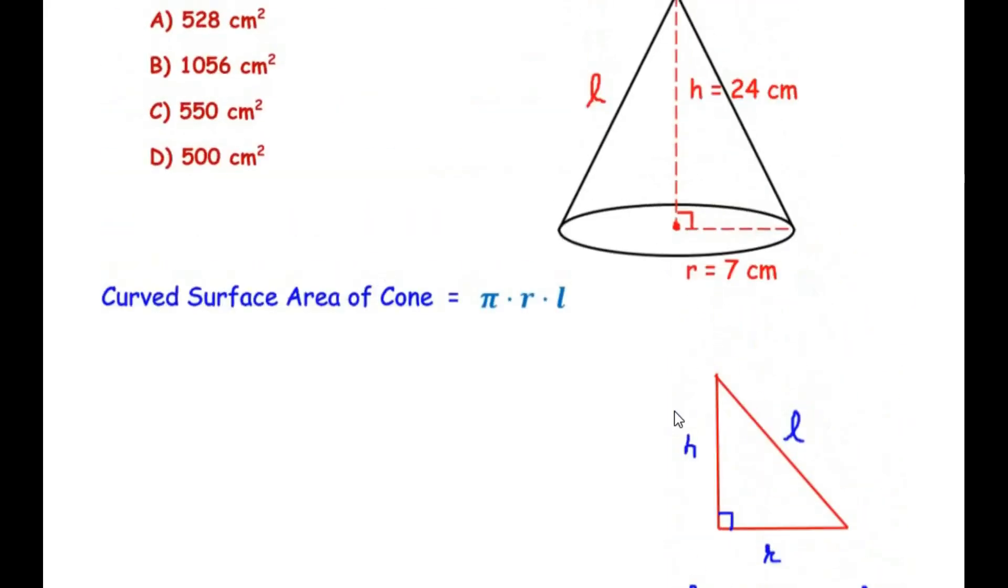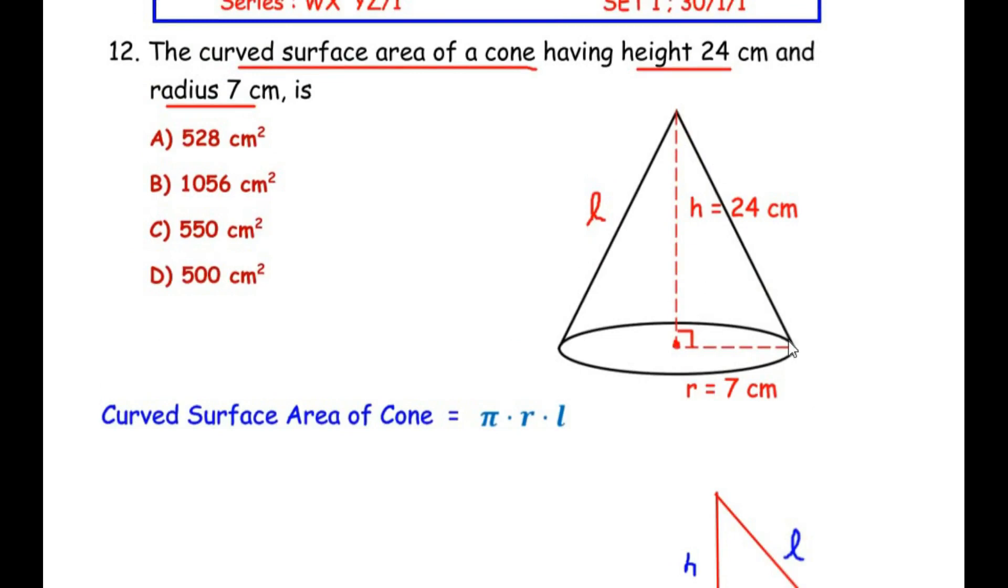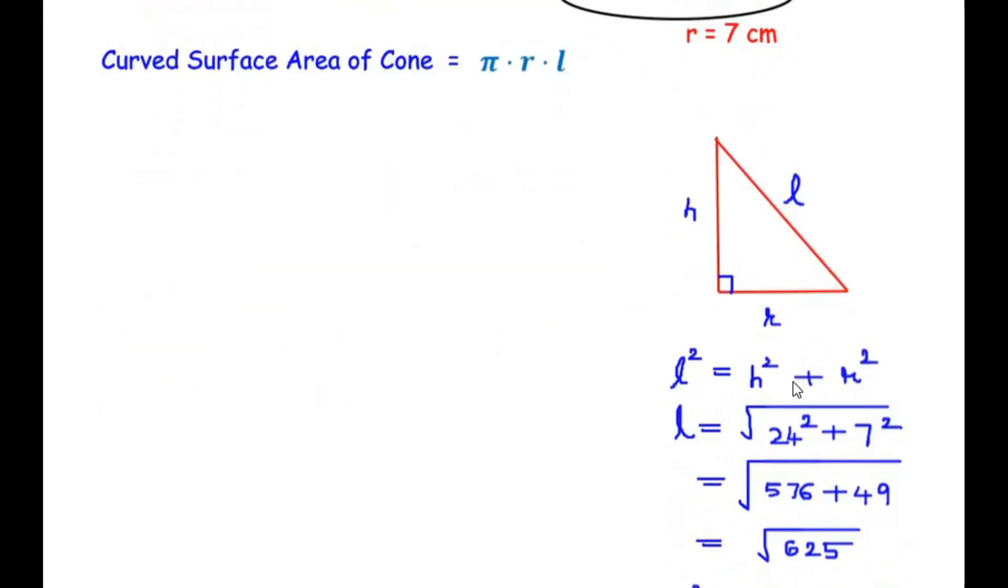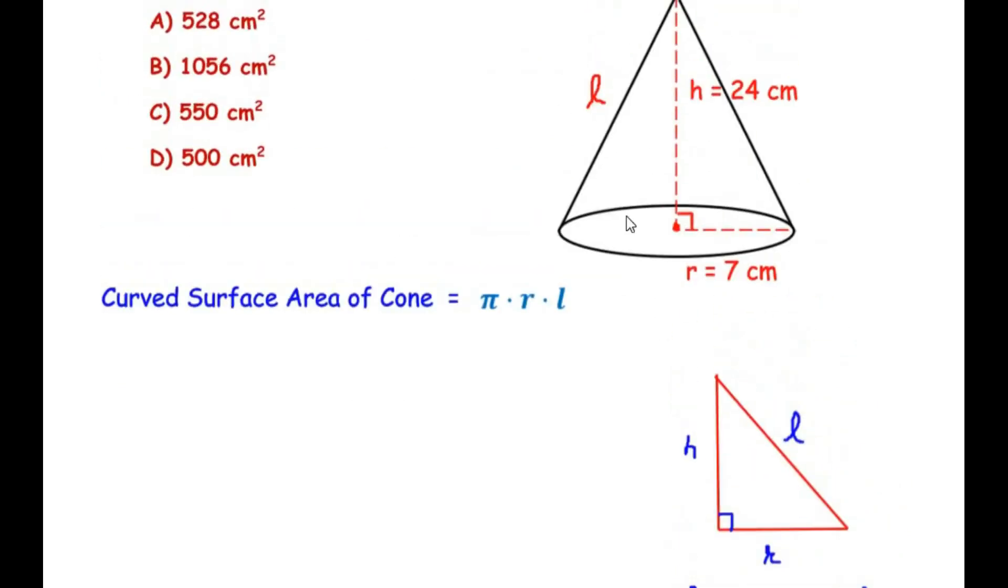Now this is one of the Pythagorean triplets that is if one of the sides of the right angle triangle is 24 and the other side is 7 then the hypotenuse is going to be 25. So if you remember the Pythagorean triplet you can just avoid using this Pythagoras theorem and directly make use of the value of the slant height which is 25.